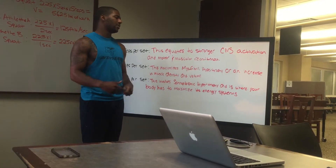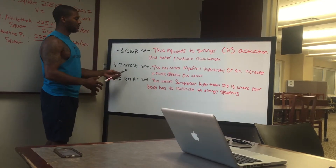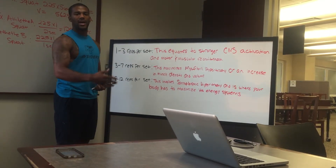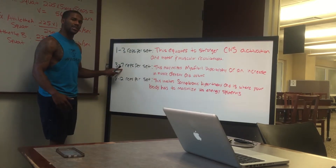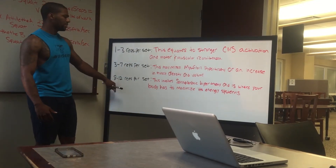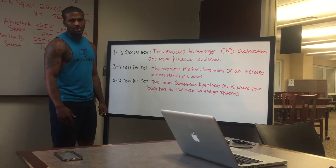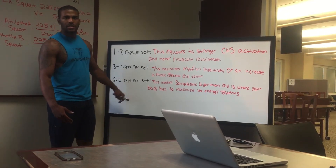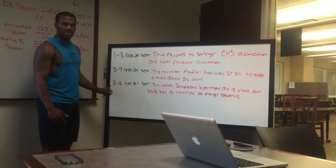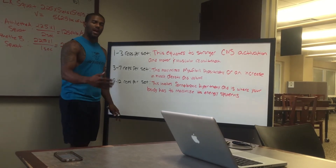Three to seven reps per set maximizes myofibrillar hypertrophy — an increase in muscular density and size. This is where, if you're doing five to ten sets, you stay in the three-to-seven rep range to increase volume while staying in good myofibrillar hypertrophy territory. Eight to twelve reps targets sarcoplasmic hypertrophy, where the body maximizes energy systems. These are the bodybuilding-style sets — people trying to expand muscle size — like three or four sets of eight to ten reps.